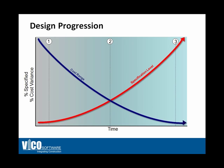I did show this diagram last week, reflecting the design progression of the project. To the left side of the diagram is the start of the project, when the specification level is really low — you only know the requirements as defined by the owner, such as the number of square footage of office space required and the number of parking spaces. At that point in time, the cost range you need to work with is large; the variance between minimum and maximum cost is pretty large.